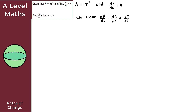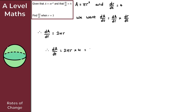Let's start by finding dA/dr. That's nice and straightforward — just basic differentiation. Differentiating A = πr² with respect to r gives us 2πr. So dA/dt = dA/dr × dr/dt = 2πr × 4, which gives us 8πr.